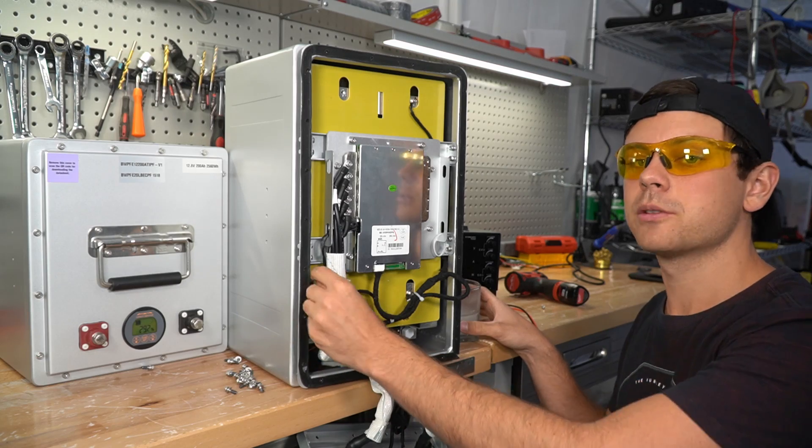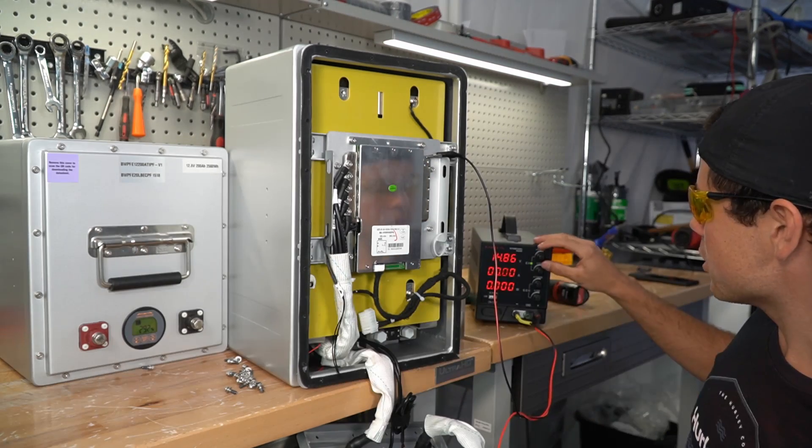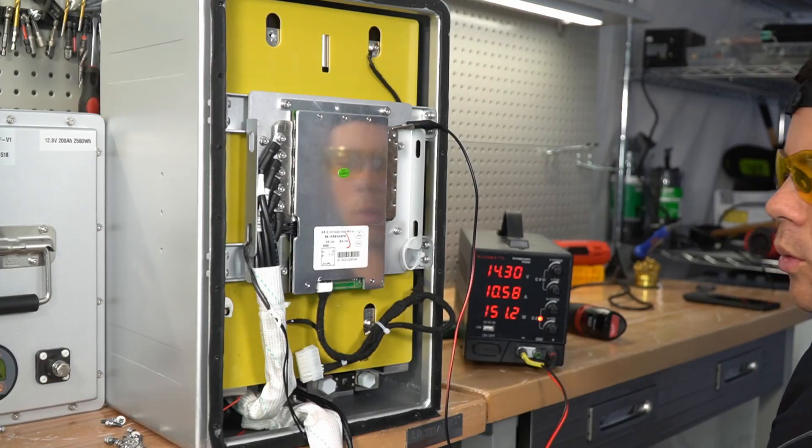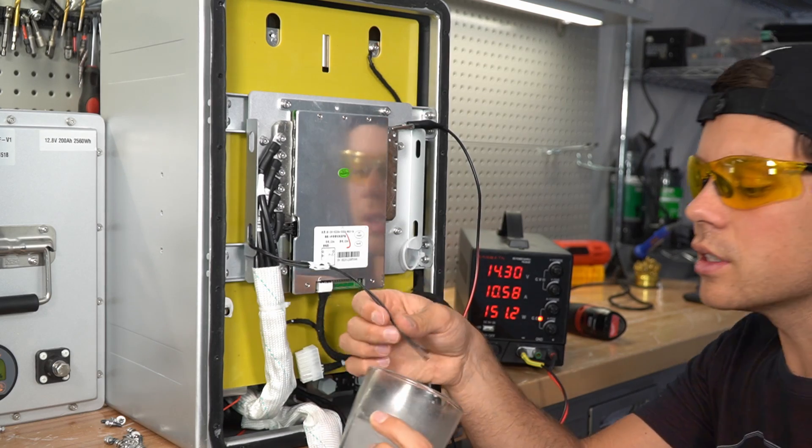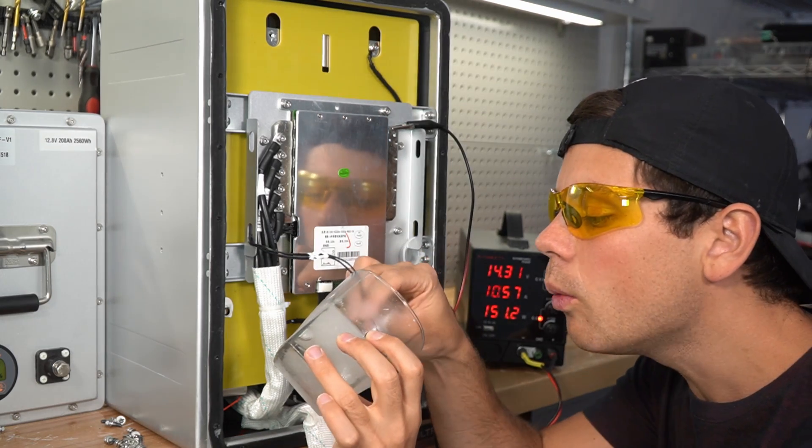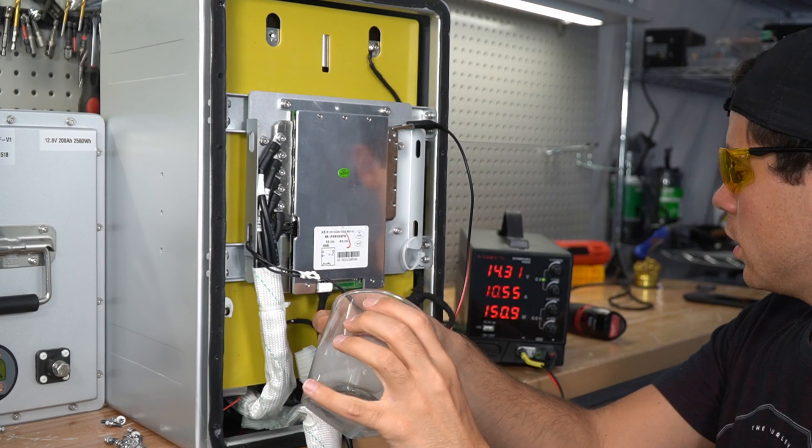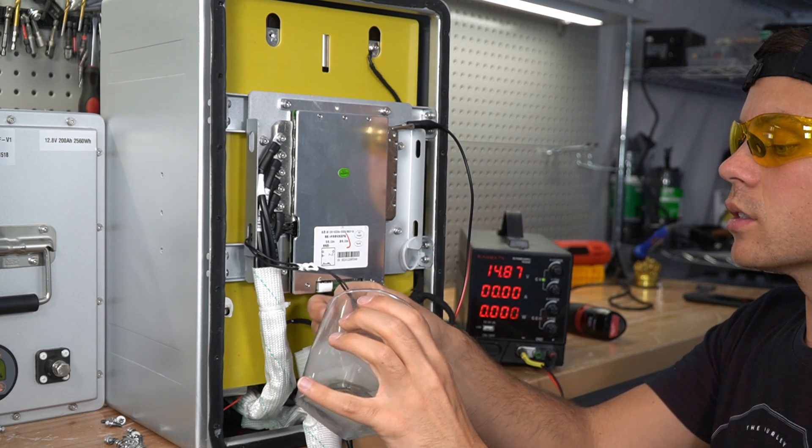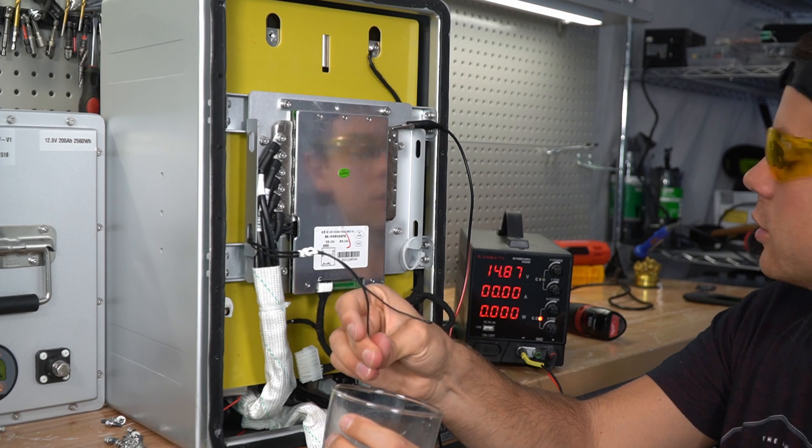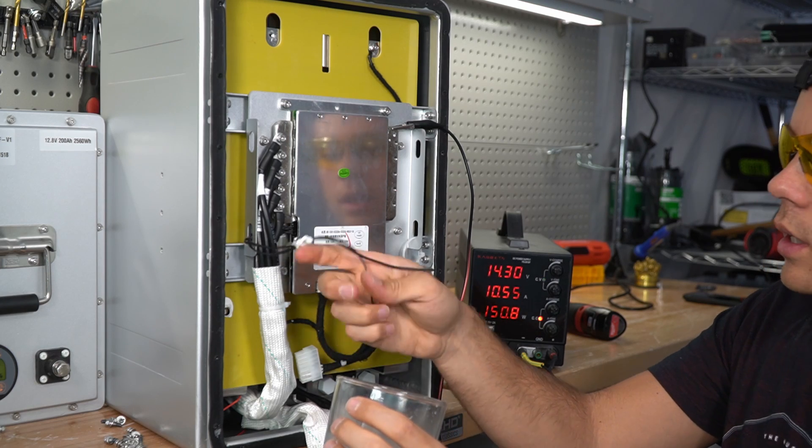So before we put it back together, let's test out the low temp charging protection. So here's our trusty power supply at 15 volts. Now we're charging. So let's add the temperature sensors to the frozen cold salt water. We'll try just one temperature sensor first. And it works. So let's try the other temperature sensor. But first we need to heat this one up. And now it's working again.